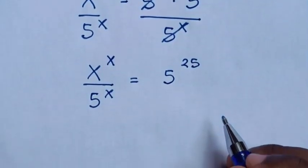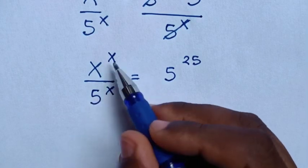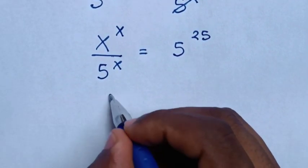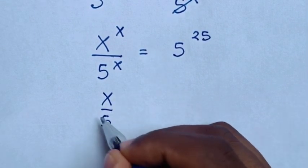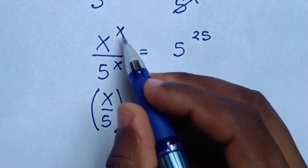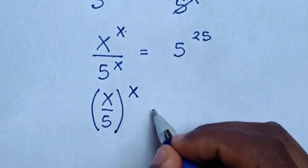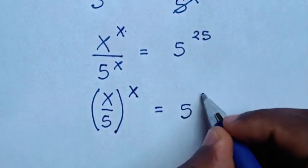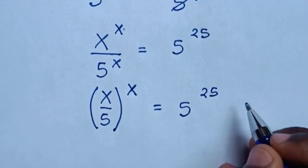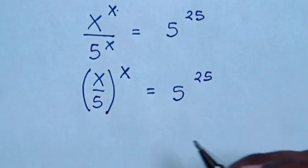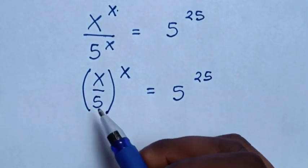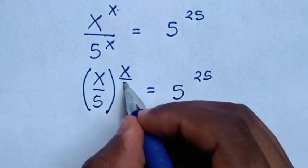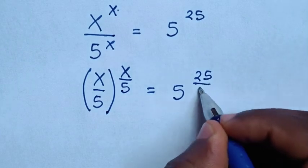Then in the next step, here is division of exponents with the same power. So it will be x over 5 in bracket, with a common power of x, is equal to 5 power of 25. Then from here the base of x over 5 will make this power same as the base of x over 5, so we'll divide by 5 on both sides.